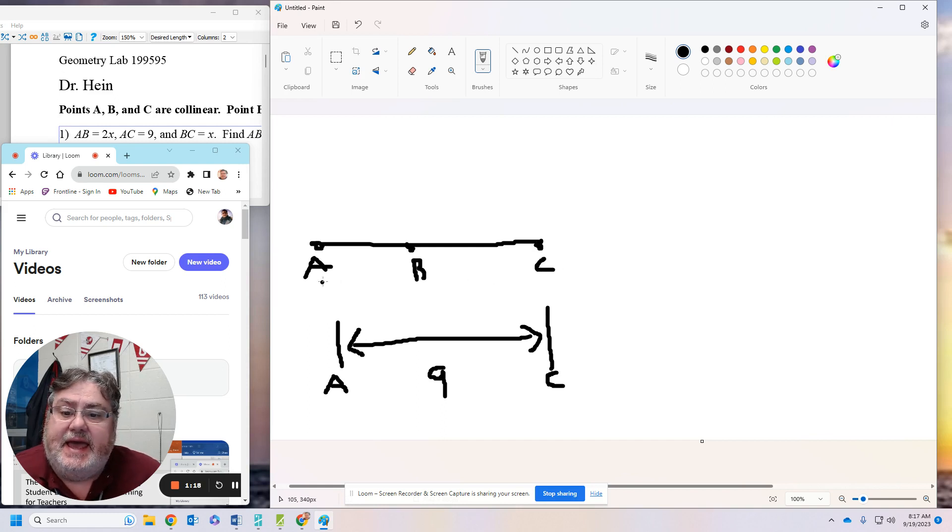Now, line segment AB is 2X, so I'm going to write in 2X. Line segment BC is just 1X.